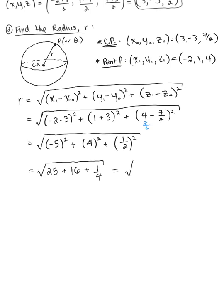We've got 25 plus 16 to leave us with 41, so 41 plus 1/4, all underneath that square root. We can multiply the numerator and denominator by 4, which leaves us with √(164 + 1)/4. So our final answer for the radius length is √165/4.